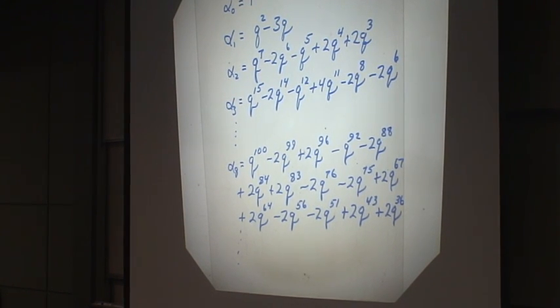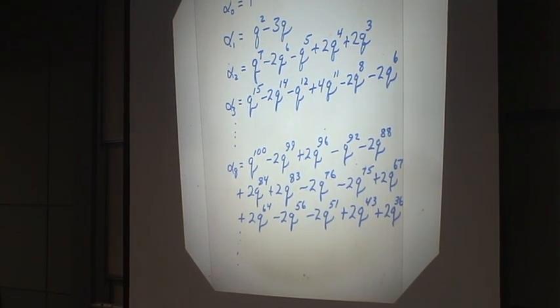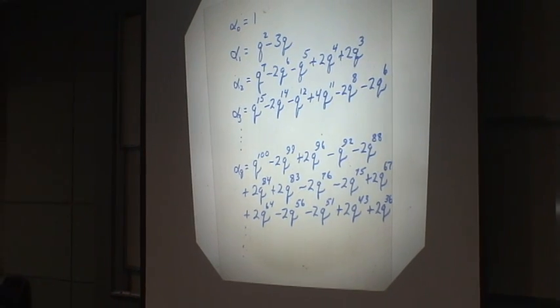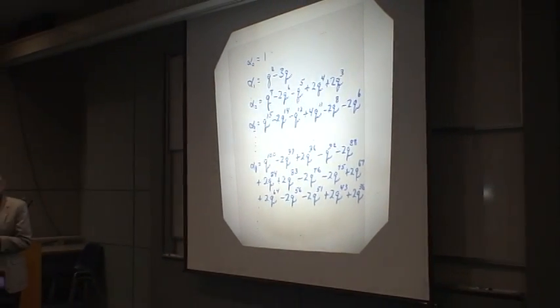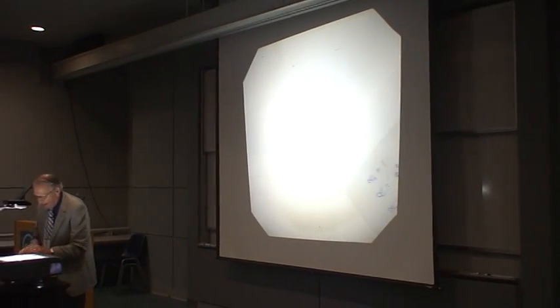The smallest exponent is 36, which is a triangular number. The largest exponent in this case is 100, which is a pentagonal number.